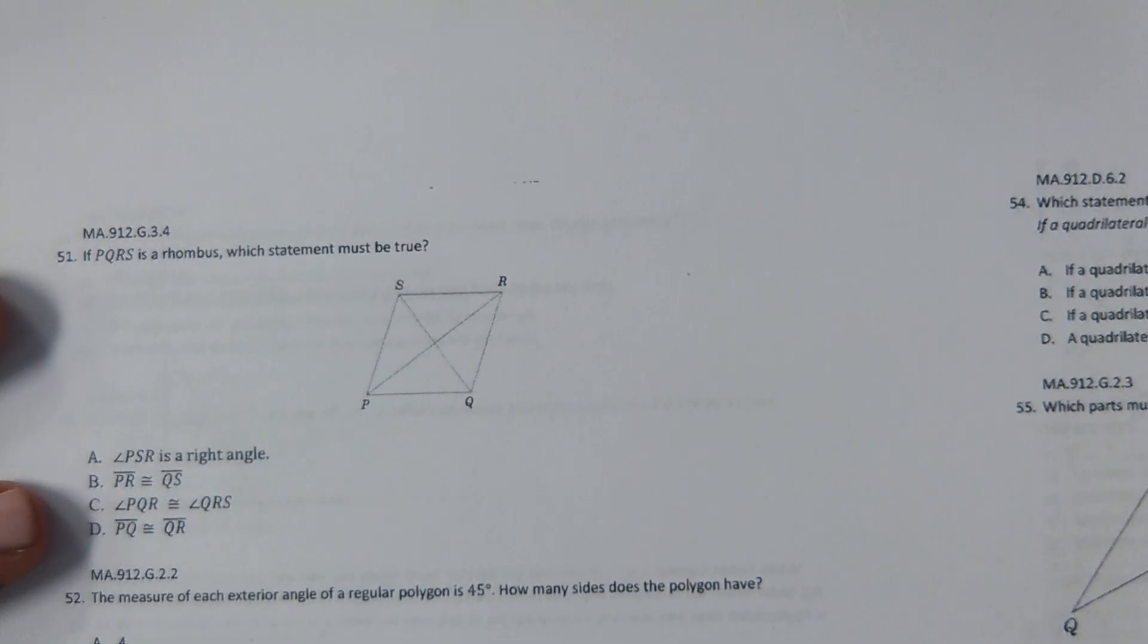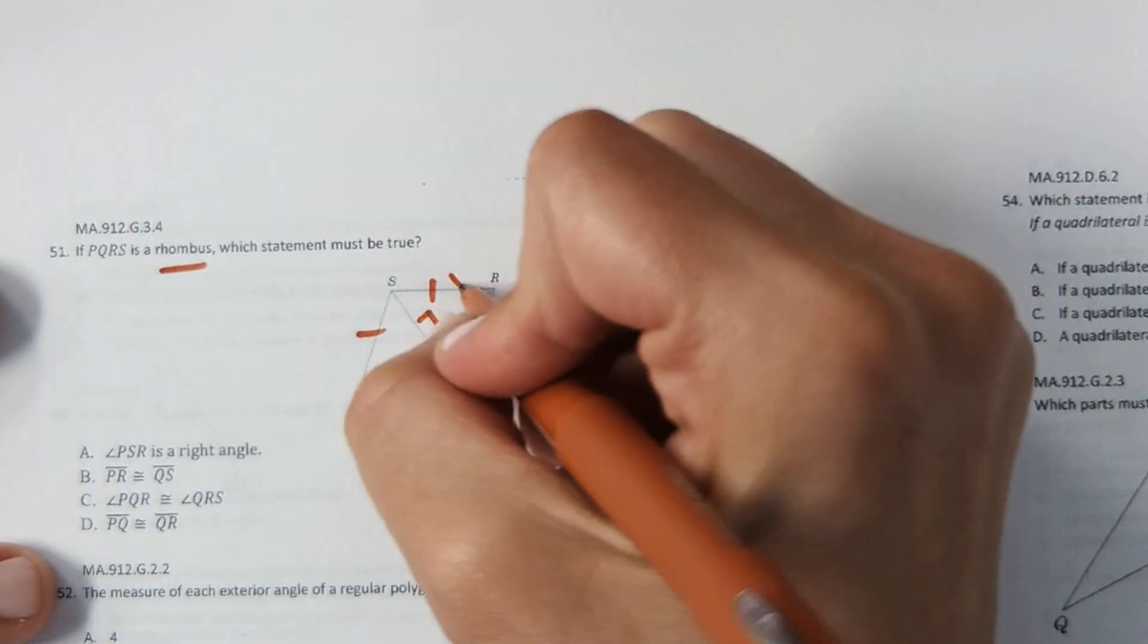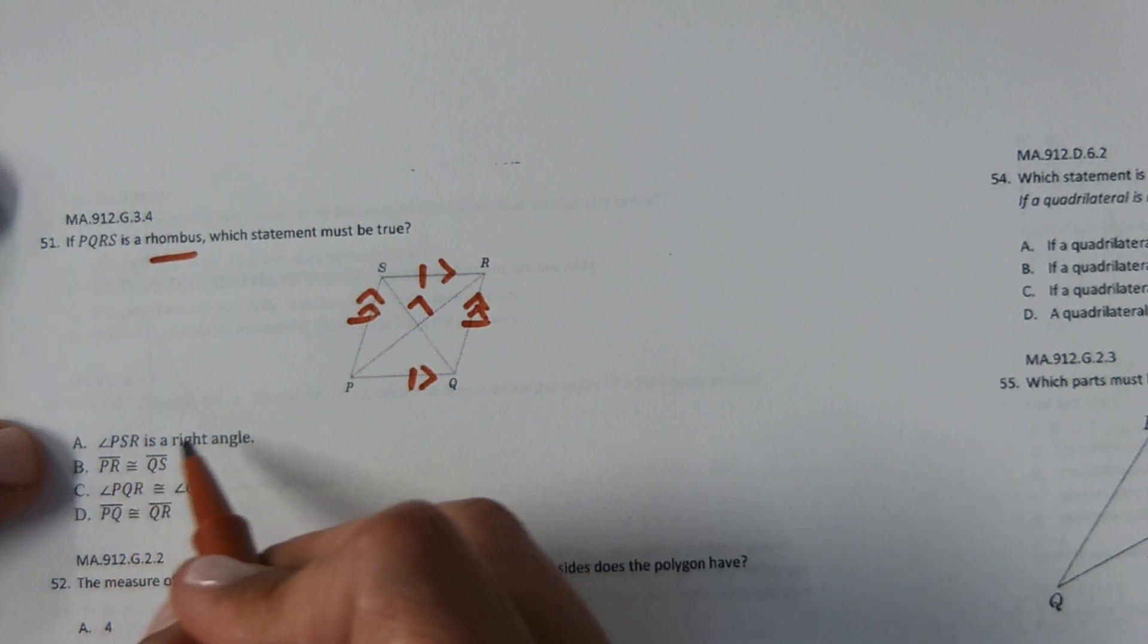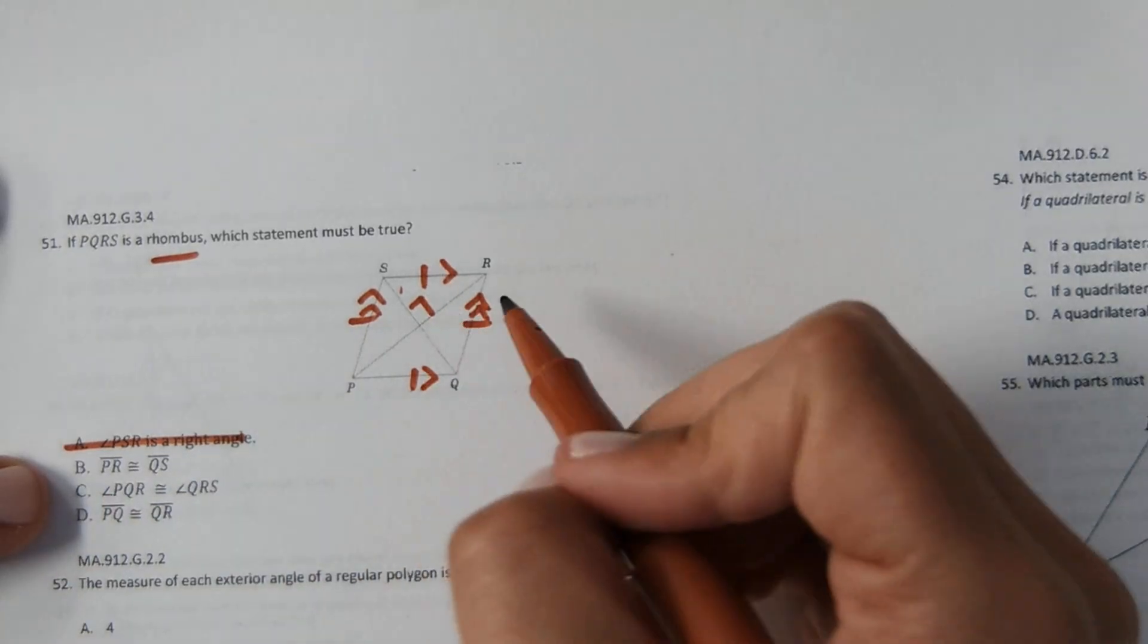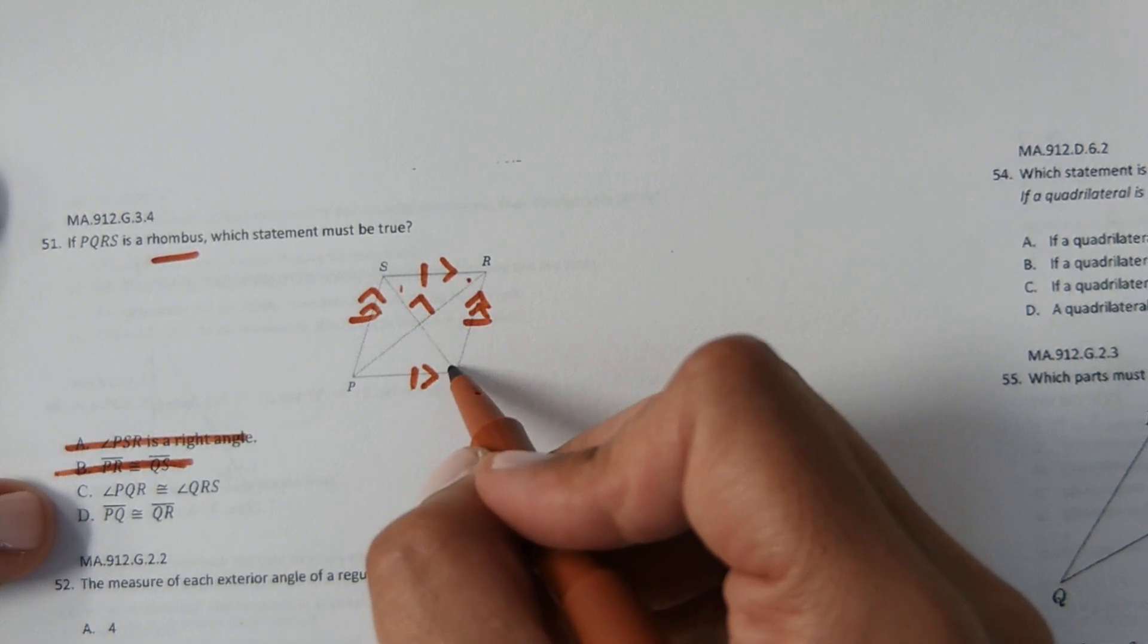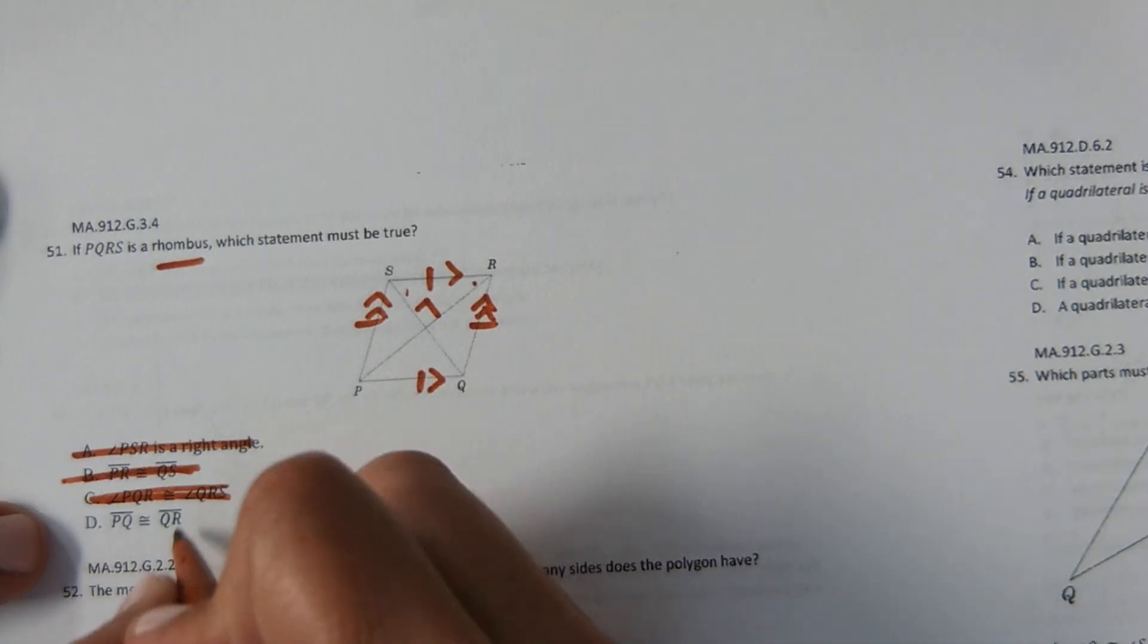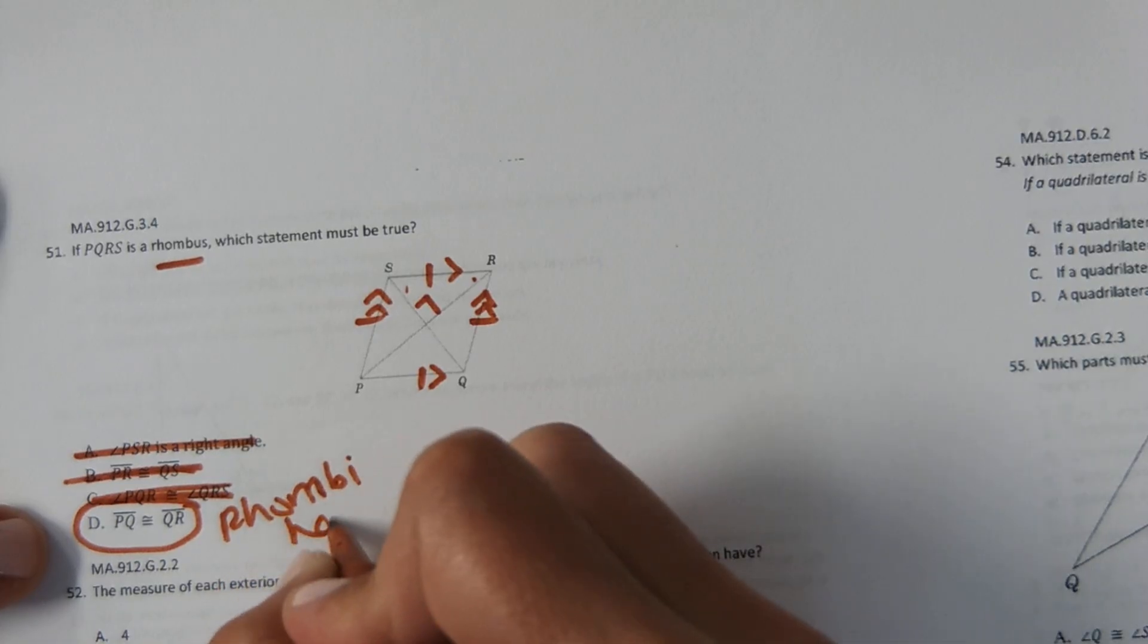It says if PQRS is a rhombus, which statement must be true? So in a rhombus, all the sides are equal. The diagonals are perpendicular. Also opposite sides are parallel. So looking at this, it says angle PSR is a right angle. No, that's not a 90 degree angle. PR is congruent to QS. No, PR is longer than QS. Angle PQR is congruent to QRS. No, they're supplementary. They are not congruent. Or we can't prove they're congruent. And then last but not least, PQ is equal to QR. Yes, by definition, rhombuses have equal sides. Rhombus, rhombi have congruent sides.